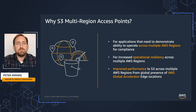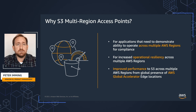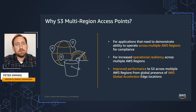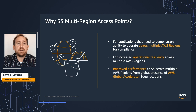Now with multi-region access points, we have the ability to operate across Amazon regions and give you a single global hostname as an entry point for your application and clients to use across multiple AWS regions. The other reason we built multi-region access points, beyond operational resiliency improvements, is also performance. We can now use the Amazon Global Accelerator network to remotely and securely route your requests — whether VPC-based or internet-based — to the bucket with the lowest latency, regardless of which region it's located in.